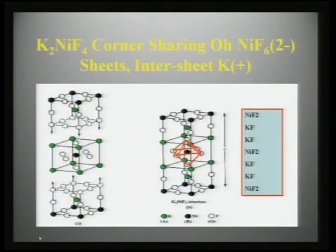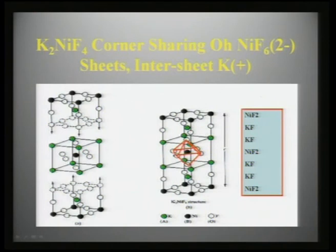K2NiF4 is another important structure in materials chemistry, seen as a repeat layer of NiF2, KF, KF, NiF2, KF, KF, and so on. This is a special case of a perovskite where you have NiF2 sheets with an inter-sheet of K+ stabilizing the K2NiF4 structure.